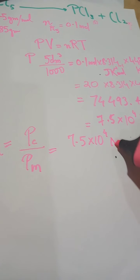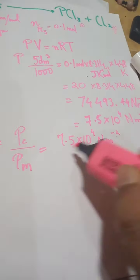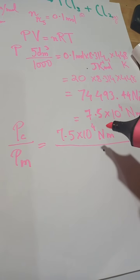So it'll in fact be 5 decimetre cubed divided by 1,000 equals 0.1 mole times 8.314 joules per kelvin per mole times 448 kelvins because it was 175 degrees, and if you add 273 degrees to it, it becomes 448.